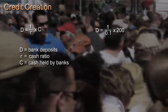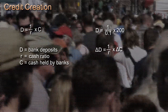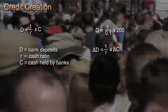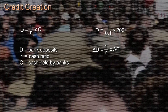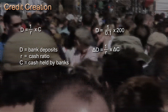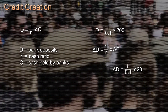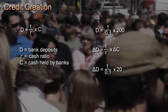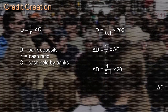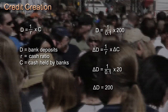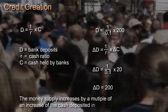What is true of the level of cash is true for changes also. So delta D — where delta means change in — delta D equals 1 over R times delta C. So with a 20-euro increase in the cash base, delta D equals 1 over 0.1 times 20, which equals 200. The money supply rises by a multiple of the increase in cash.